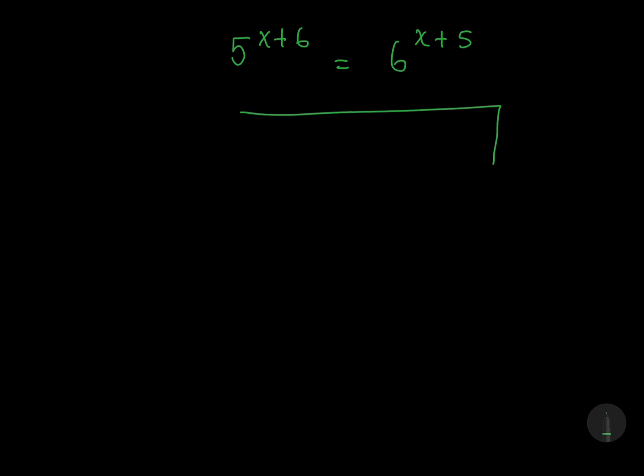Just notice something. If we have a to the power m plus n, this is just a to the power m multiplied by a to the power n. So we're going to use it.